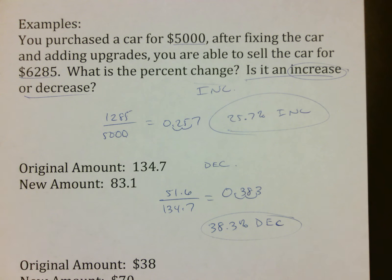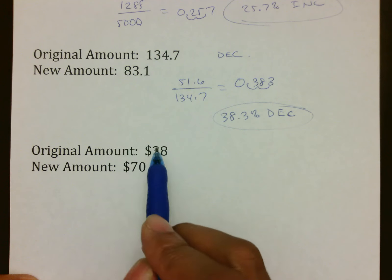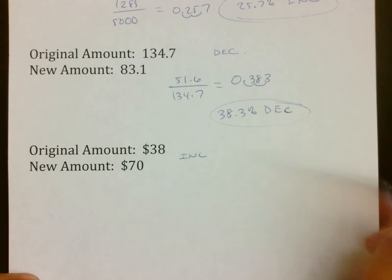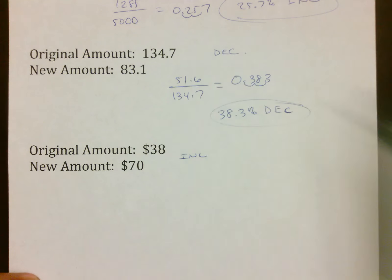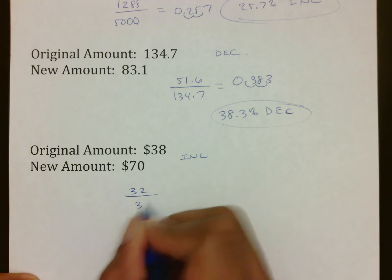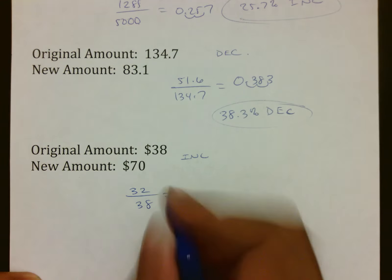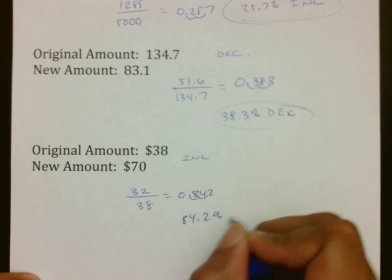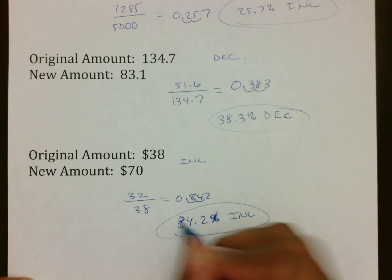Example three: original amount is $38, new amount is $70. It started at 38 and ended at 70 — that's an increase. Next, figure out how much it increased: 70 minus 38 equals 32. Divide by the original: 32 divided by 38 gives 0.842, which is an 84.2% increase.